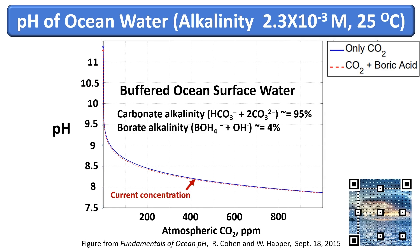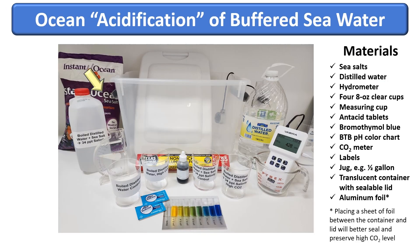That resistance, or buffering, is illustrated here. The current level of CO2 in the atmosphere is about 420 parts per million. Doubling this level to 840 parts per million would result in a decline in pH to a level that's firmly basic, but still within the range of natural variation experienced by ocean biota. Bottom line: the oceans can't turn acidic. This experiment is designed to illustrate that buffering effect.